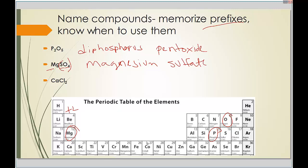For CaCl₂ — calcium is plus two from the periodic table, so we write calcium. Chlorine is in the minus one column, and with only two capital letters there's no polyatomic ion. Chlorine becomes chloride. The name is calcium chloride.